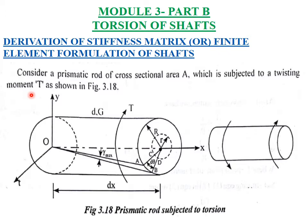We will be deriving the stiffness matrix equation for the shafts. We consider a prismatic rod of cross-sectional area A which is subjected to a twisting moment T as shown in the figure. In this figure we can see a prismatic rod which is subjected to torsion. T is the applied torsion, capital R is the entire radius, small r is the radius of this unit area which is selected.